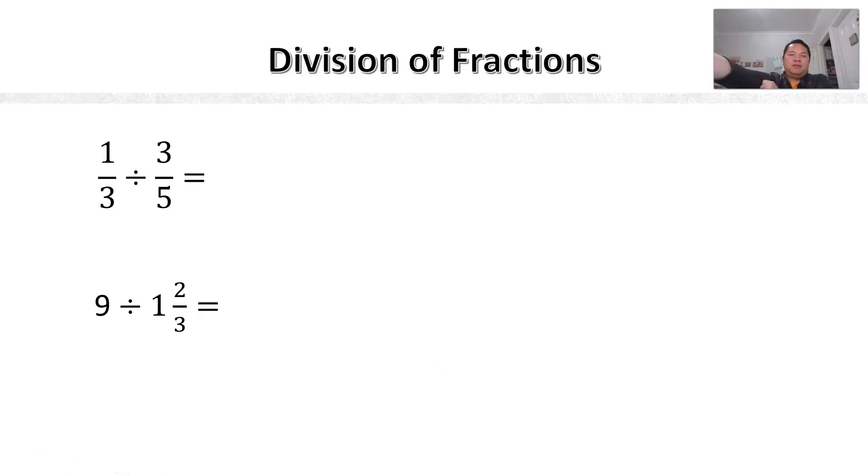So how do we divide fractions? Very simple. Whenever you have a fraction, let's say 1/3 divided by 3/5. The first fraction, you always have to leave it alone. Don't do anything to it. And when you multiply, change the divide sign to multiply, you need to get the reciprocal of the fraction here. So 3/5, the reciprocal of 3/5 is actually 5 out of 3. That's about it. And then from there, you do the same thing as what you did previously when you learned about multiplication. 1 times 5 is 5, 3 times 3 is 9. So 5/9 is the answer.